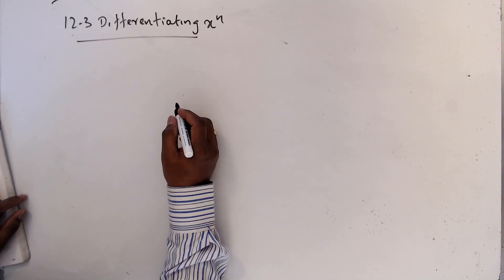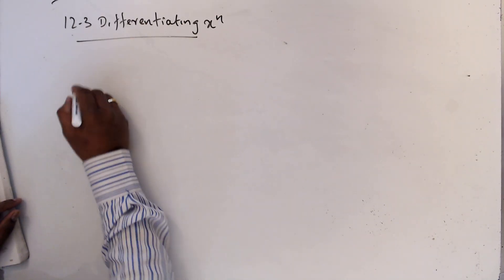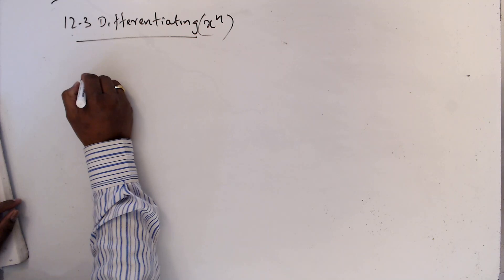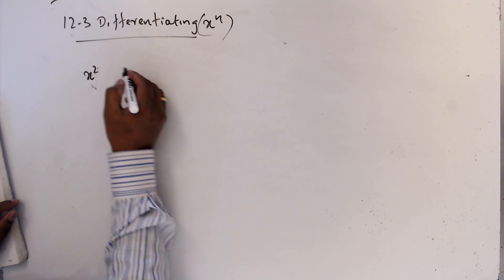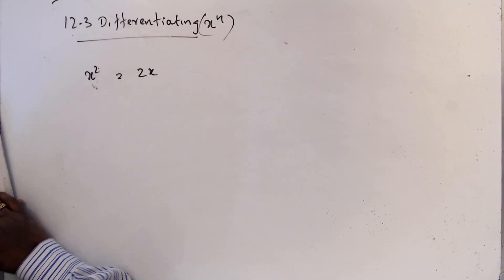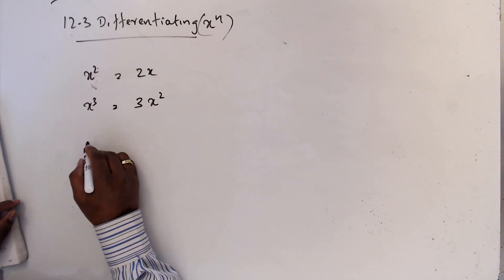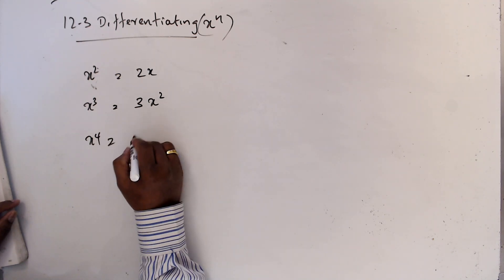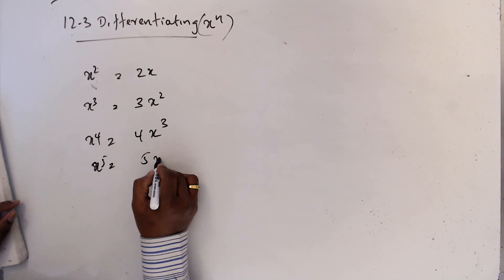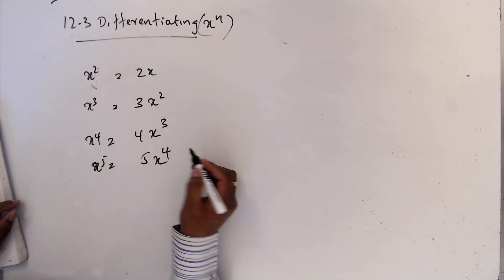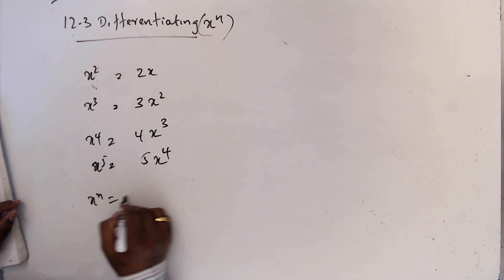12.3: differentiating xⁿ. Let's start with examples. x² differentiate, the answer is 2x. x³ differentiate, the answer is 3x². x⁴ differentiate, the answer is 4x³. x⁵ differentiate, the answer is 5x⁴. Then what about xⁿ — what is the answer?